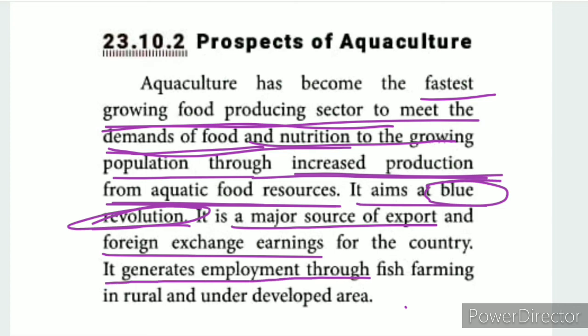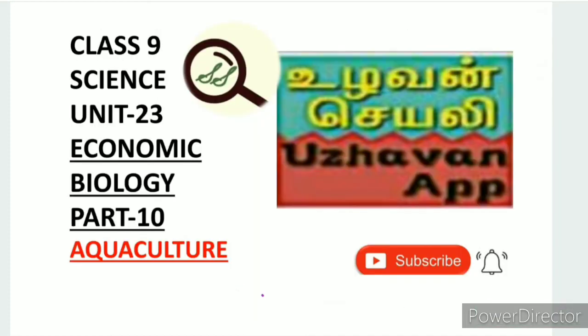Aquaculture generates employment through fish farming in rural areas. There are many fish varieties and names being researched at universities. In this video, we covered two types of aquaculture: fresh water aquaculture and marine aquaculture.